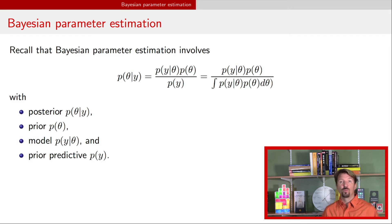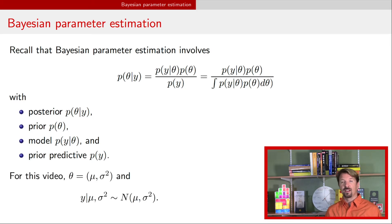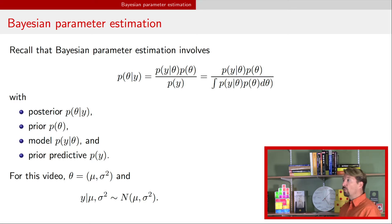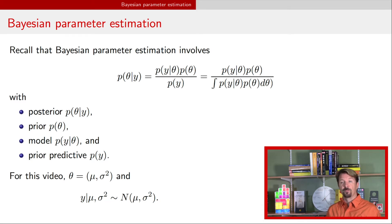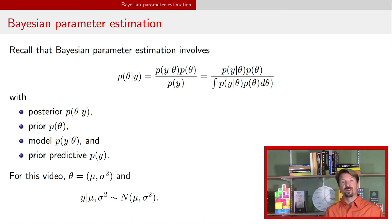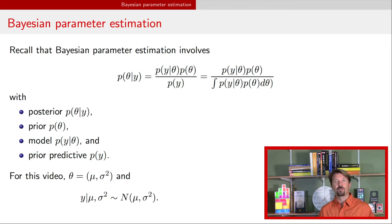For this particular video, we are going to be talking about a normal model. That means the model in this equation is the model for normal random variables. Typically we're going to have a collection of normal random variables, so we replace theta by mu and sigma squared, and replace the model PDF with the normal PDF for a collection of normal data. That's the brief reminder of what Bayesian parameter estimation's goal is — now let's apply it to the normal model.